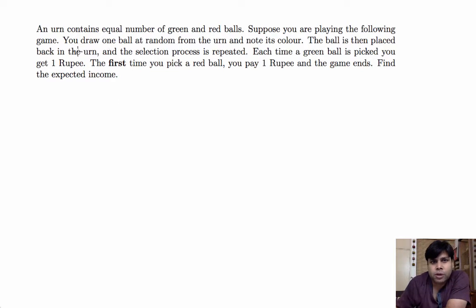Because there are equal number of green and red balls and this is done with replacement, we know that probability of getting a green ball in any turn is half and probability of getting a red ball is also half.